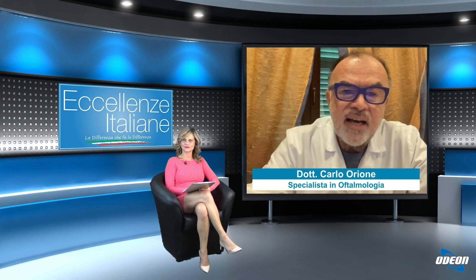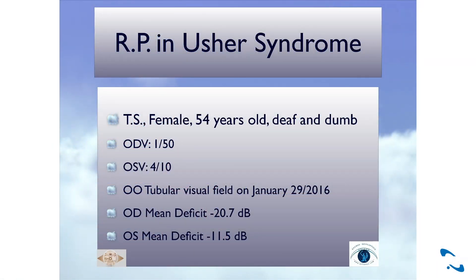Quali potrebbero essere gli sviluppi futuri nella ricerca e nell'applicazione del laser 2RT per le patologie retiniche? Attualmente stiamo studiando questo laser insieme al centro di Amsterdam per la retinopatia pigmentosa, una malattia molto invalidante che porta a cecità. La prima paziente trattata presentava la sindrome di Usher, una sindrome che dalla nascita causa sordità e retinite pigmentosa. A 54 anni questa signora vedeva un cinquantesimo all'occhio destro, praticamente non vedeva neanche le lettere più grandi del tabellone, e quattro decimi a sinistra.